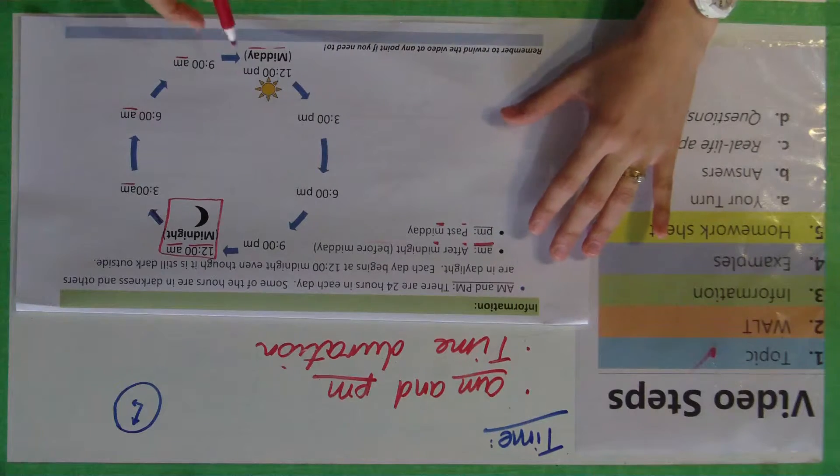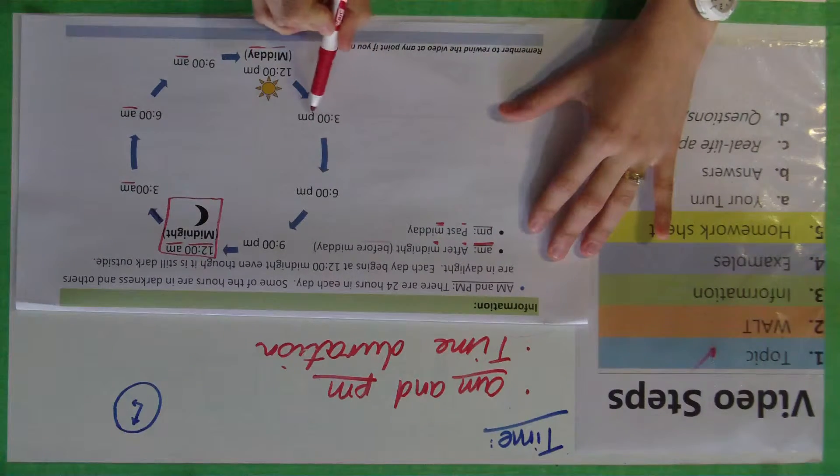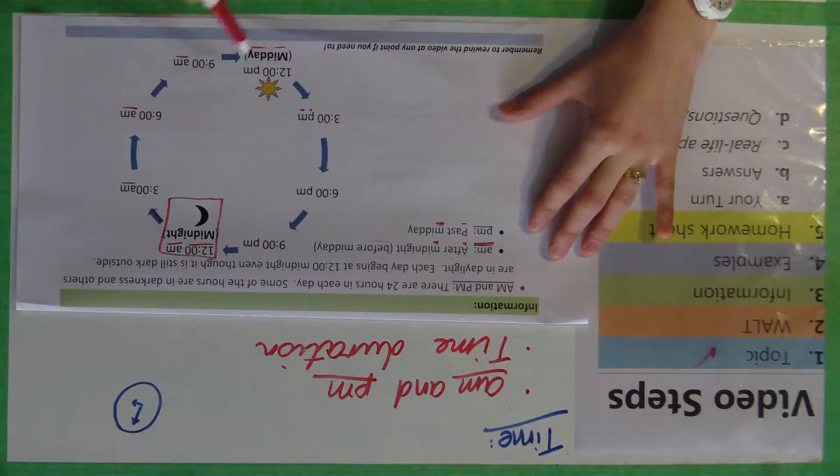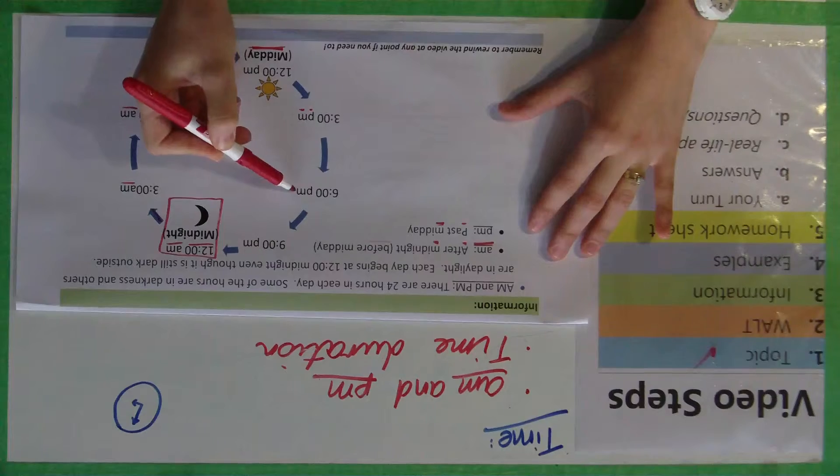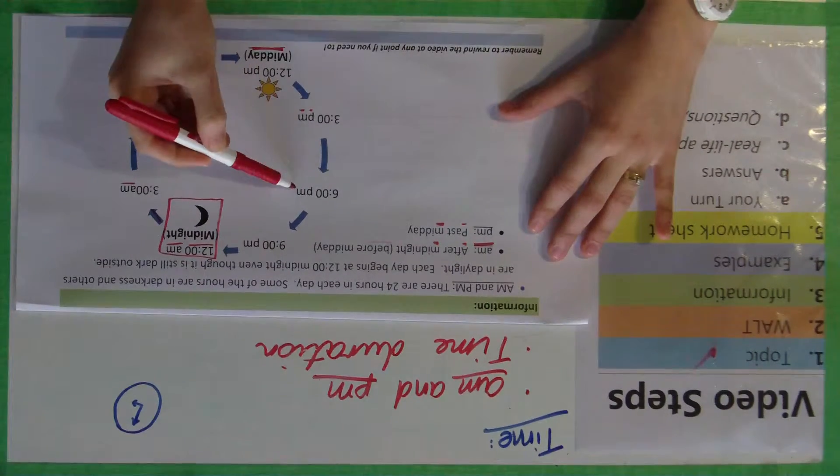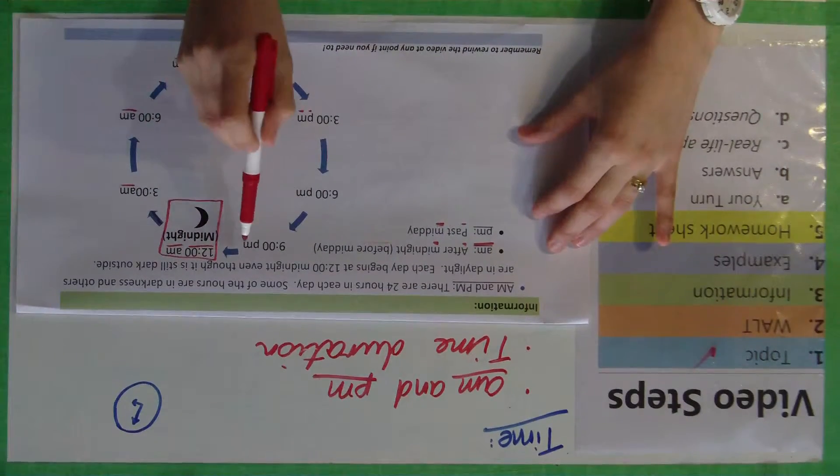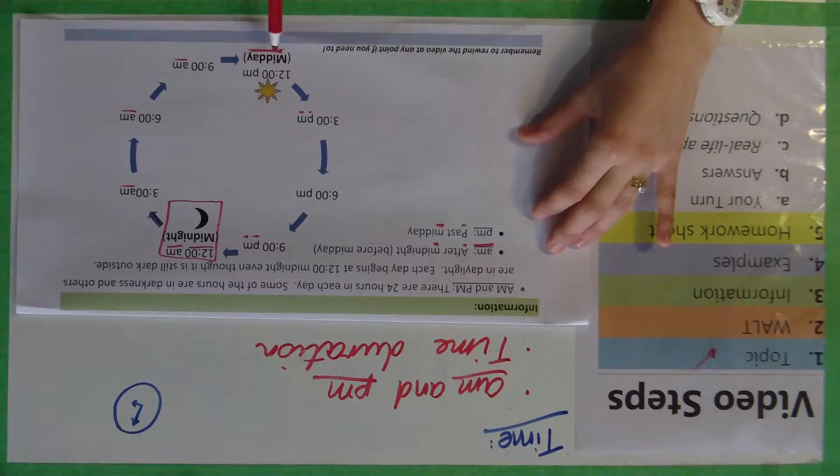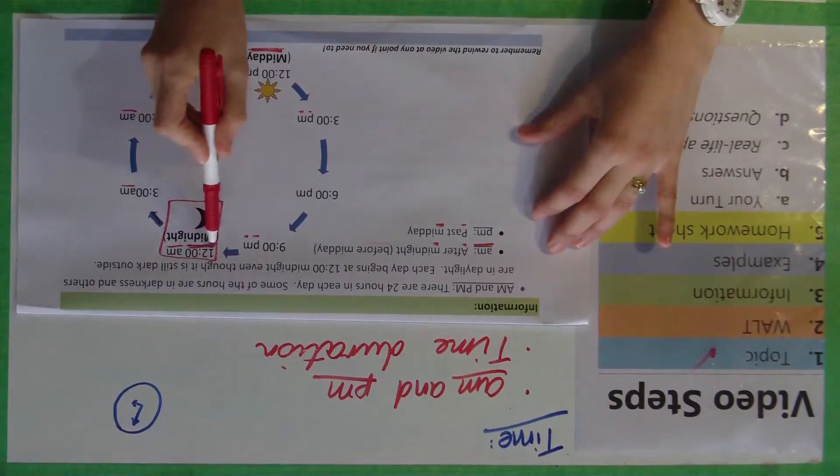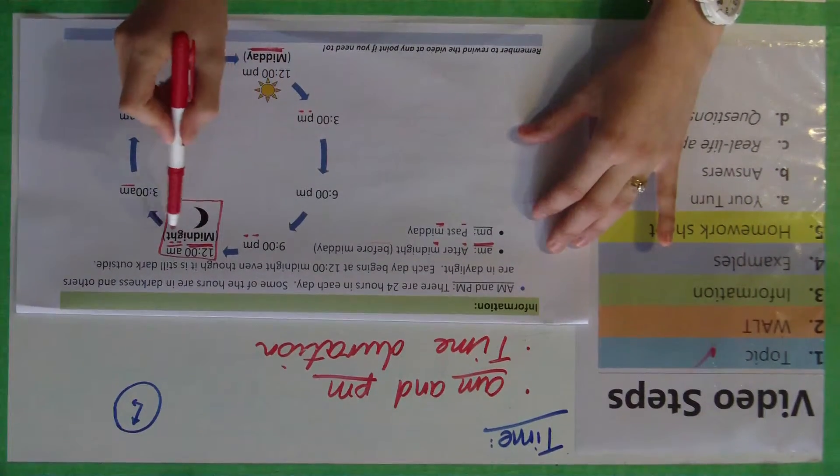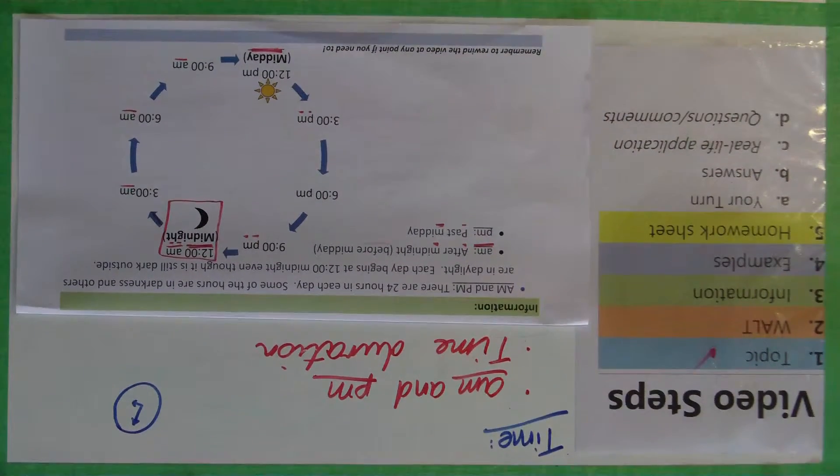So then it moves over, and it goes 3 p.m. because it's still past midday. Then 6 p.m., 6 o'clock, past midday, 9 p.m. This is getting very dark at night time. And then it goes still past midday. And then it hits midnight at 12 o'clock, and that's when it becomes a.m. again because it's after midnight now. That's just an easy way I like to remember it.